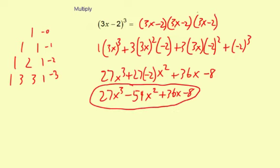And there is your answer. And if you multiplied, did an expansion, (3x - 2) times (3x - 2) and multiply that result by (3x - 2), you would get this exact same answer. It's just a different way to do the problem.